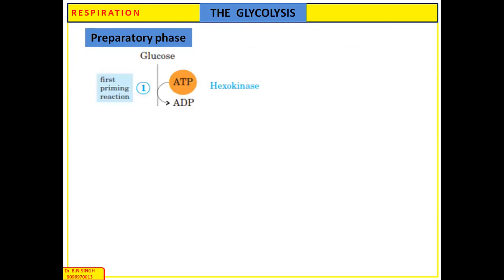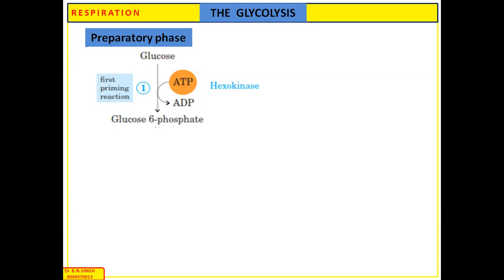In the preparatory phase, glucose is converted into glucose-6-phosphate in the presence of the enzyme hexokinase. The consumption of one ATP occurs here. This is the very first rate-limiting step of glycolysis and is an irreversible reaction.